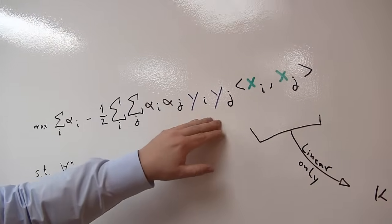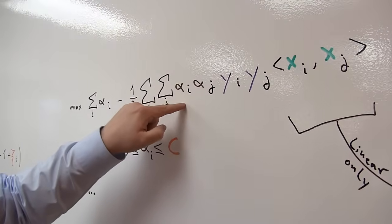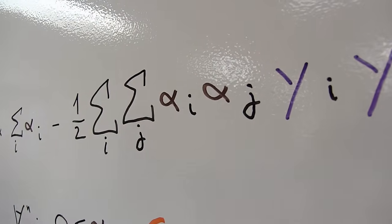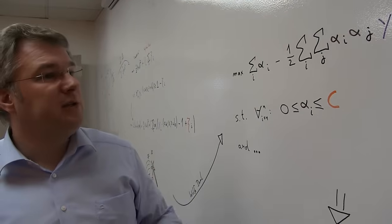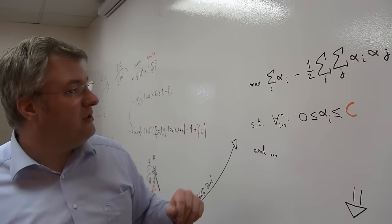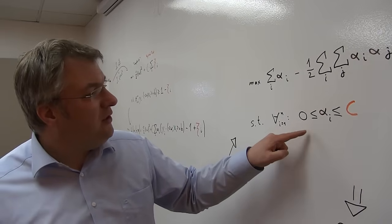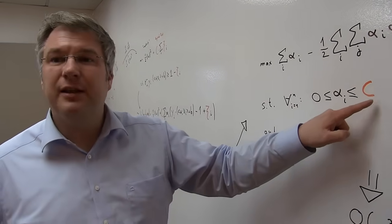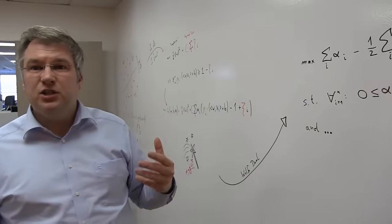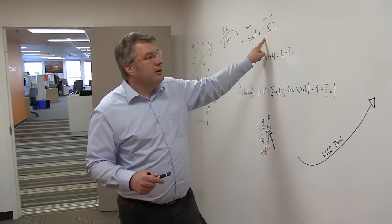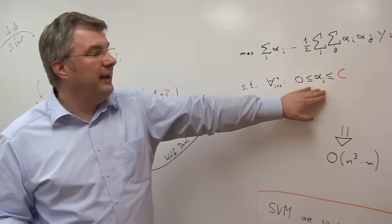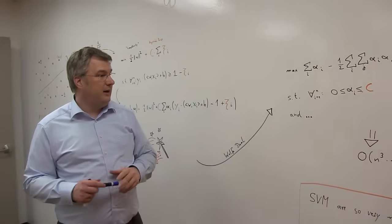Then we multiply with the actual labels, and then there are those weighting factors here. We can also call them Lagrange multipliers, and they say how important is the data's point for this formula, for this model here. And those Lagrange multipliers, they are somewhere between zero, and they have an upper bound of C, and that's exactly this trade-off factor. So if we say like errors are really a bad thing, then we can give examples of higher weight, so we have a higher upper bound.